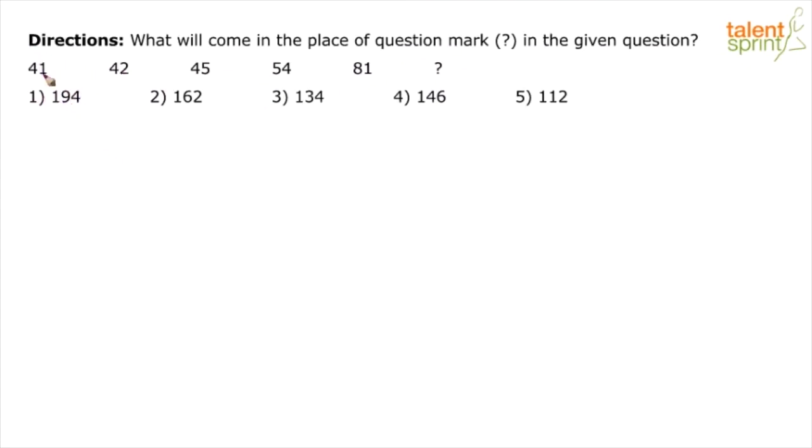So let's just see. I think we will play with the differences first. Let's find out the difference between pairs of numbers here, consecutive pairs of numbers. So 41 plus 1 is 42, 42 plus 3 is 45, 45 plus 9 is 54, 54 plus 27 will be 81.